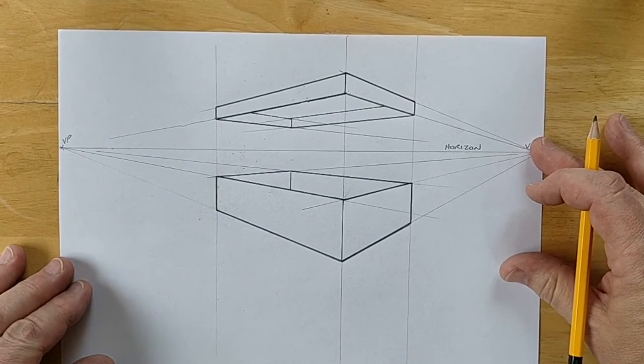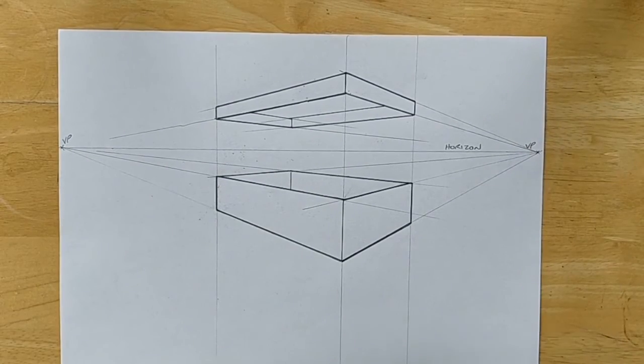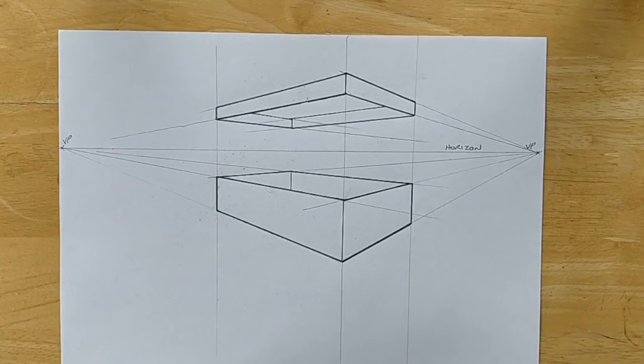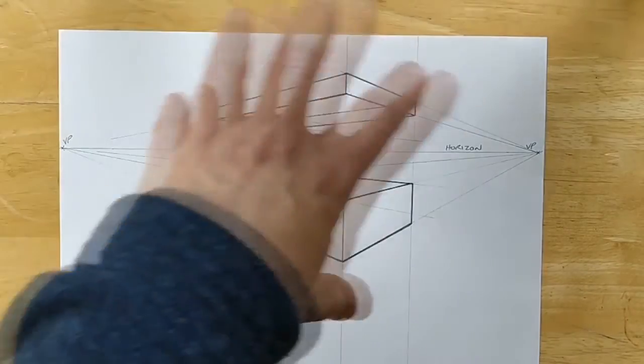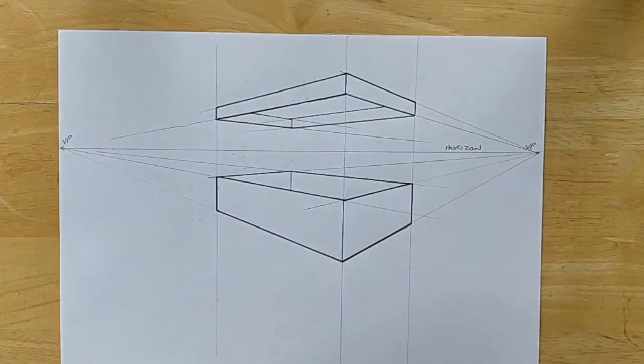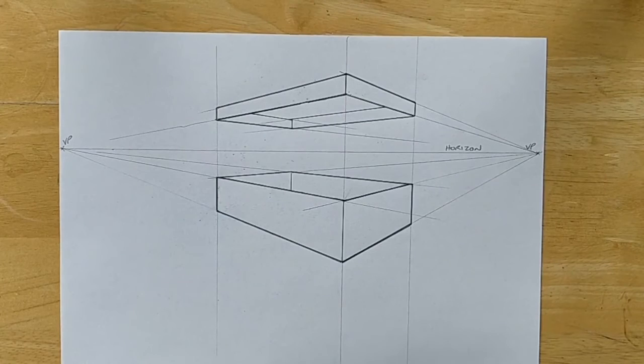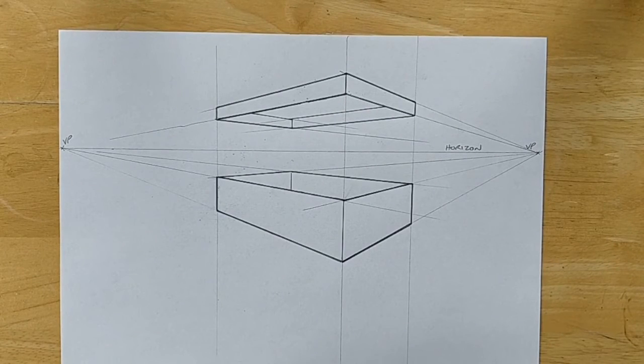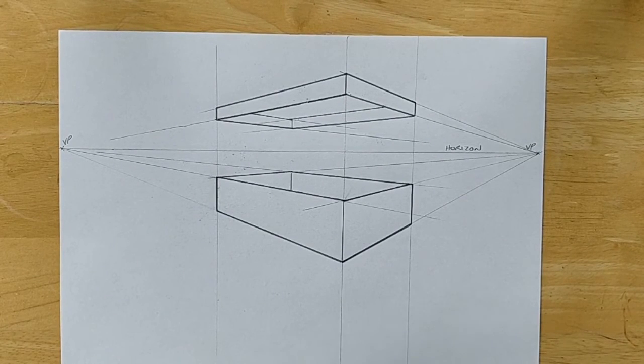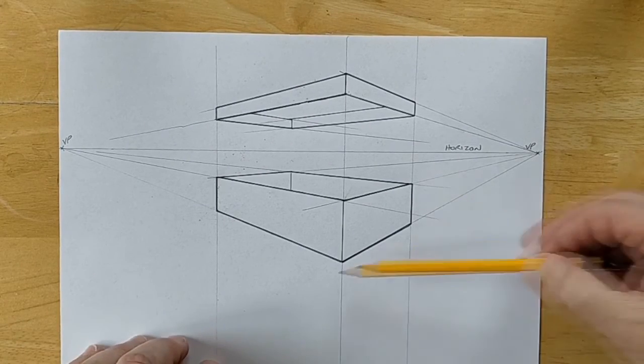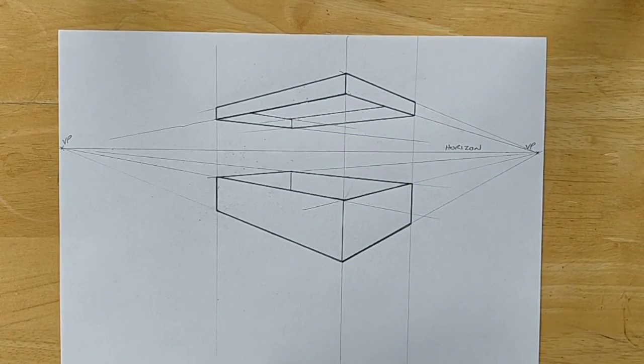There you have it. That is a box drawn using two point perspective. Now of course you don't always want to be designing boxes but you can use this principle to set out your drawing and then make more complex shapes within the boxes that you draw. And that gives you a good chance to make your design sketches look nice and realistic, nice three dimensional. Particularly if you use the thick and thin line technique like I have here.